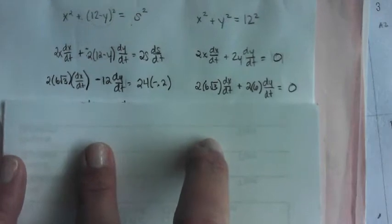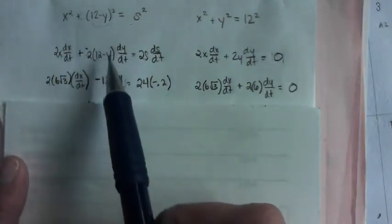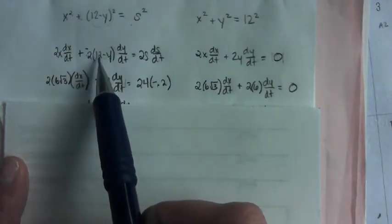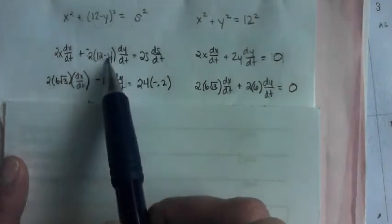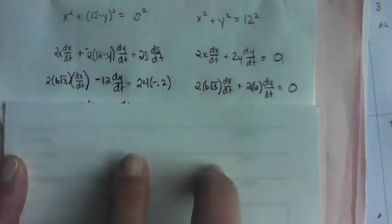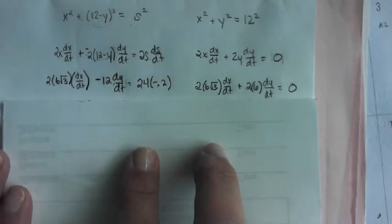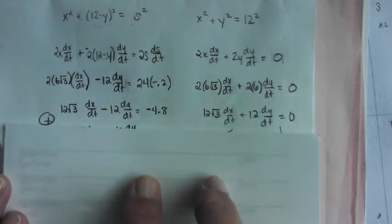So I plug all that in. Now, I did a lot here in one step. Since I knew Y is 6 at the moment, I just did 12 minus 6 is 6 times the negative 2 and made it negative 12 DY DT. But everything else is just throwing your current numbers in there and simplifying.